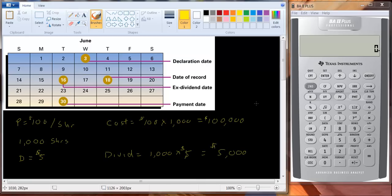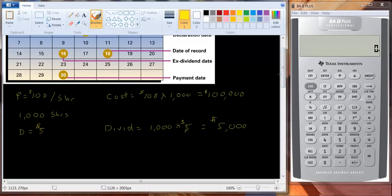So if you think about the money you're spending, your cost is broken up into two parts, or the price you're paying is broken up into two parts. That's $95,000 for the stock, plus $5,000 for the dividend.